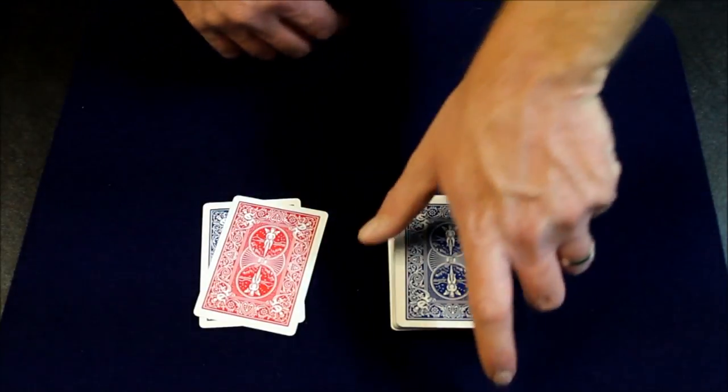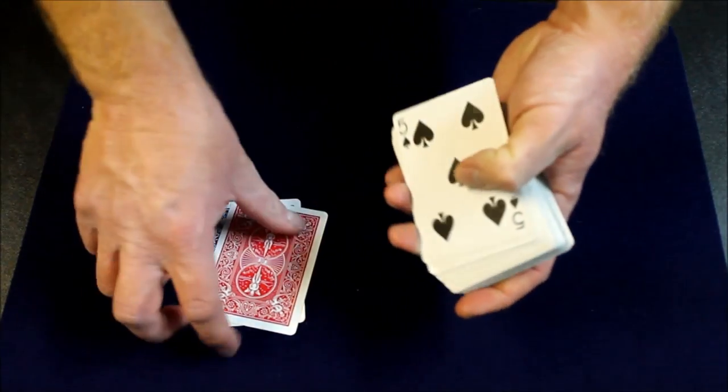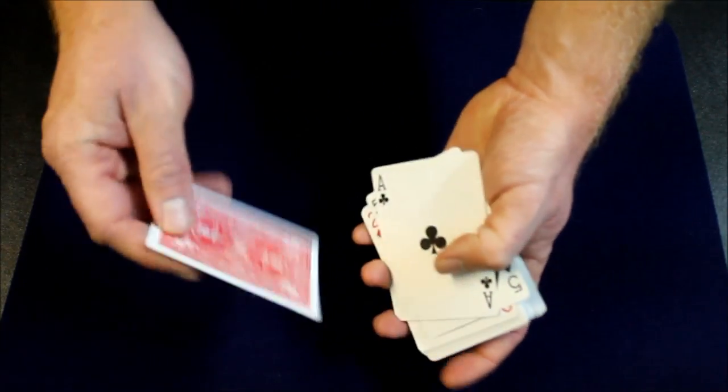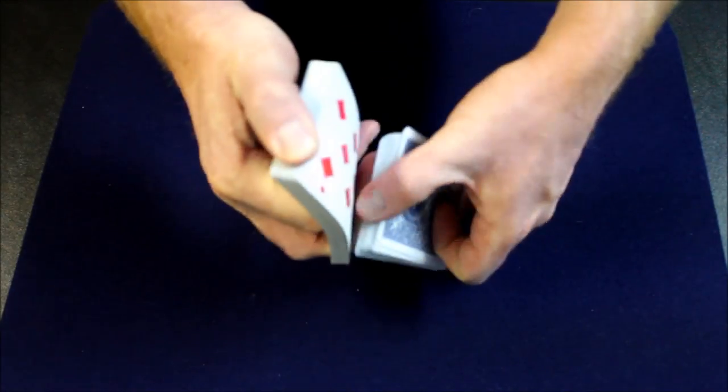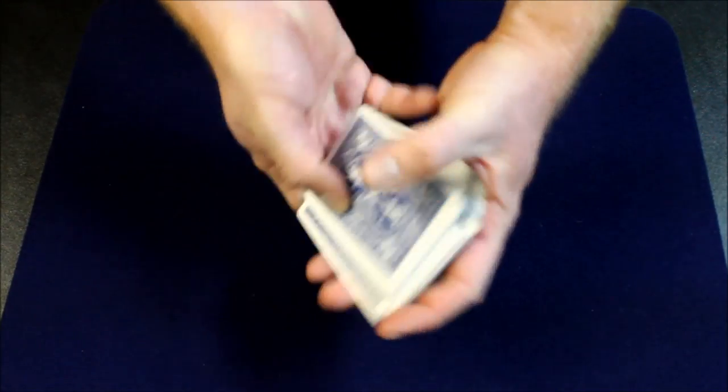Okay so you have your red card and your blue card. And you're gonna put the blue card and then the red card on the bottom of the deck. So you can do whatever shuffle you want as long as you maintain the bottom two cards.